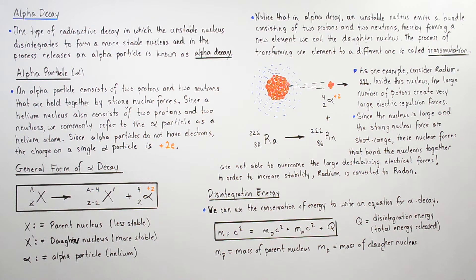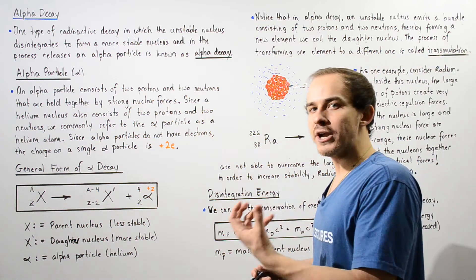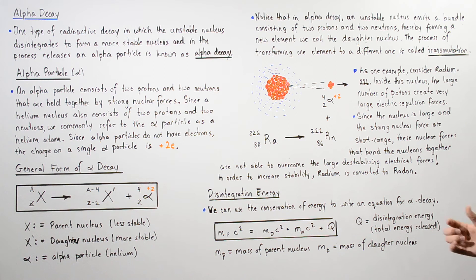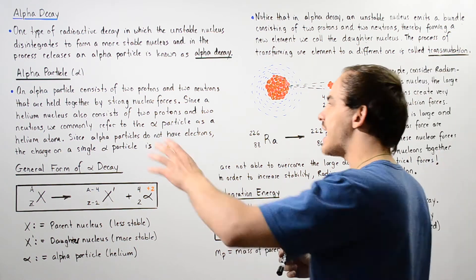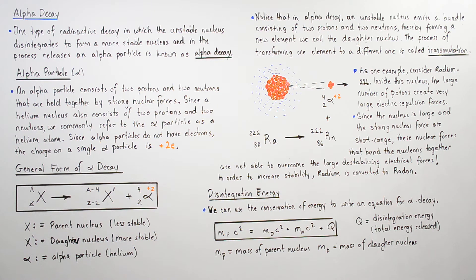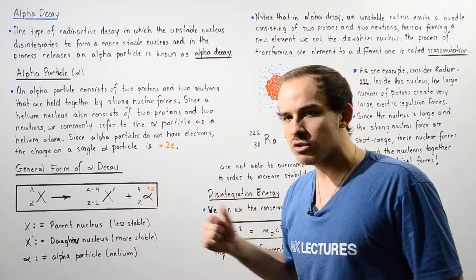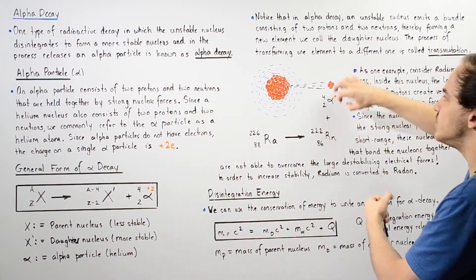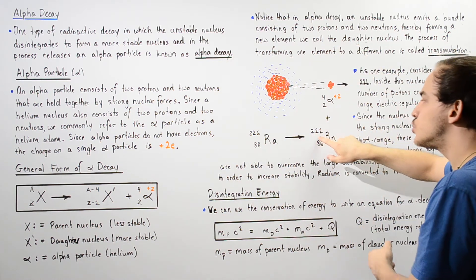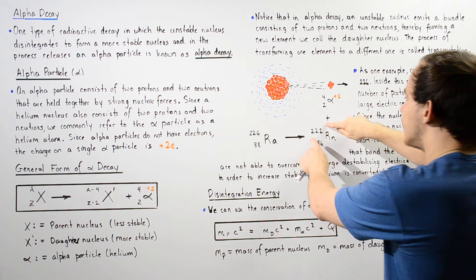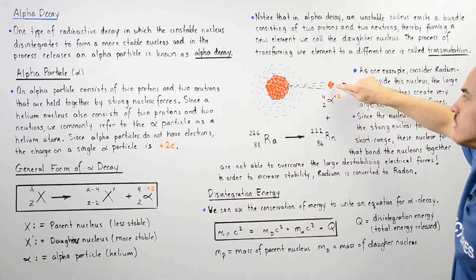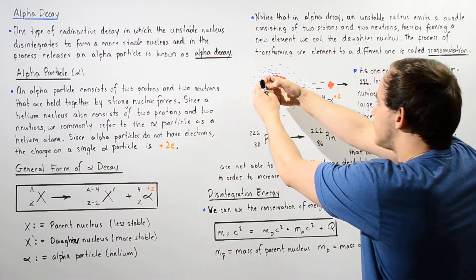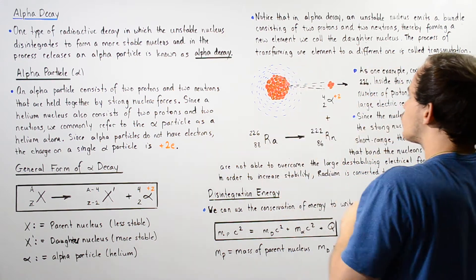To increase stability, the nucleus must break down and form a different atom. Radium readily undergoes alpha decay to produce an alpha particle as well as radon. Radon is the more stable daughter nucleus — it has 86 protons because two protons went into the alpha particle, and its atomic mass is 222 because we subtract four nucleons. This alpha particle is released from the nucleus of the radium atom.